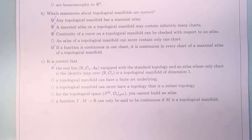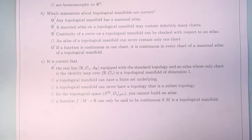A topological manifold can have a finite set underlying — no, this is wrong. We saw that the topological manifold is locally homeomorphic to R^d, so it locally looks like some part of R^d. However, R^d and all its subsets are uncountable, and a finite set cannot look like something uncountable. So this is wrong.